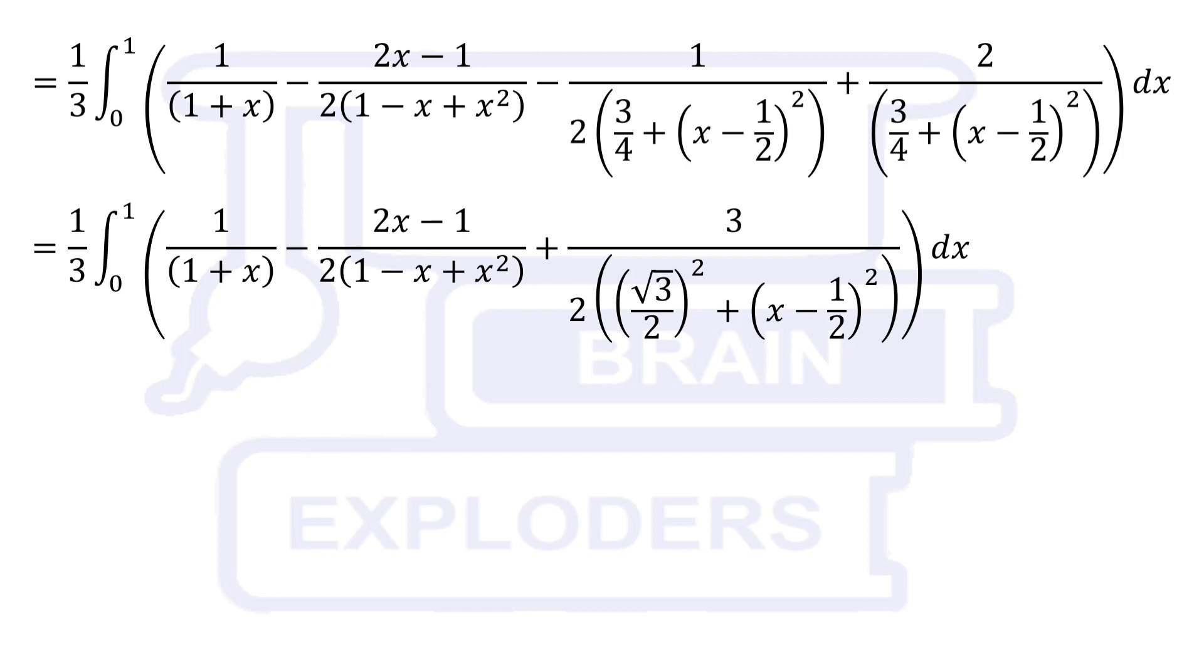So try to write this second fraction in such a way that the numerator is the differentiation of the denominator, and add the remaining part having a numeric numerator in the third fraction. Now all these are general forms which can be integrated using general formulas.